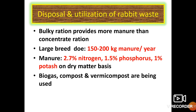For disposal and utilization of rabbit waste, the amount of manure produced depends on the breed, ration fed and amount of bedding material used. Bulky ration provides more manure than concentrated ration. A large-breed doe along with her kits produces 150-200 kg of manure throughout the year. The manure contains 2.7% nitrogen, 1.5% phosphorus and 1% potash on a dry matter basis. Biogas, compost and vermicompost can also be produced from rabbit waste.